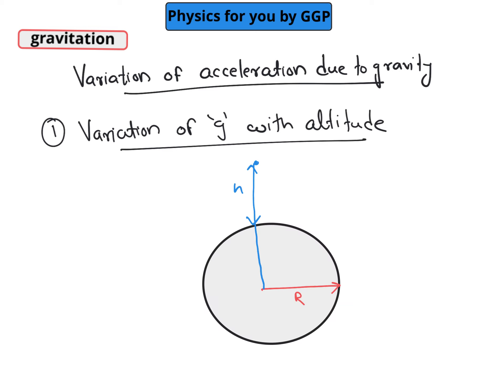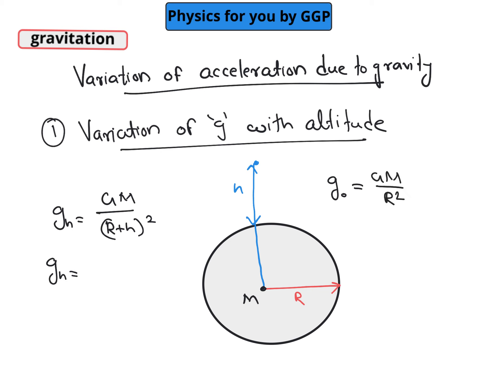Let's say we are going to find out the value of acceleration due to gravity at a height h above the Earth surface, which is represented by g_h. We can write the equation for that. It is GM — you can assume the total mass is concentrated at the center. So if you are calculating the distance from the center, it is r plus h. So acceleration due to gravity at height h is GM divided by (r plus h) squared. On the surface, acceleration due to gravity is GM divided by r squared, which is generally represented by g_naught.